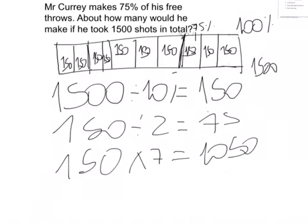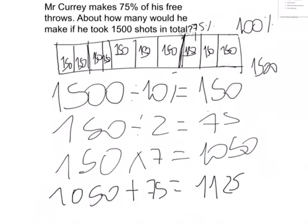And now we're gonna do 1050 plus 75, because 75 is 150 divided by 2 and this is half. So the answer is 1125. So 75% of 1500 is 1125.